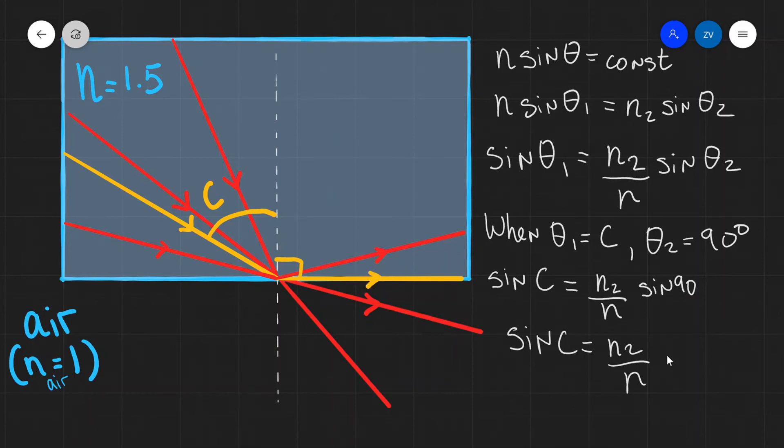Even a further simplification is that our second refractive index is the refractive index of air which is equal to 1. So in this case the sine of the critical angle will be equal to 1 over the original substance of refractive index N. And this is the formula that has been given in our formula sheets.